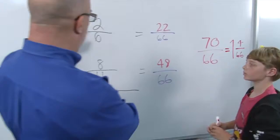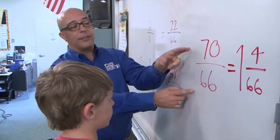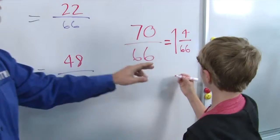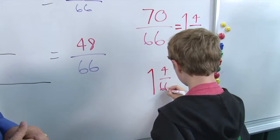Perfect. So we added two-sixths and eight-elevenths. You made equivalent fractions with least common denominators. Then we came out to seventy sixty-sixths, an improper fraction, and you turned that into a mixed number. Can we simplify the mixed number? Yes. Okay. We can. You can go ahead and write it down here. Okay. So. One and four sixty-sixths.